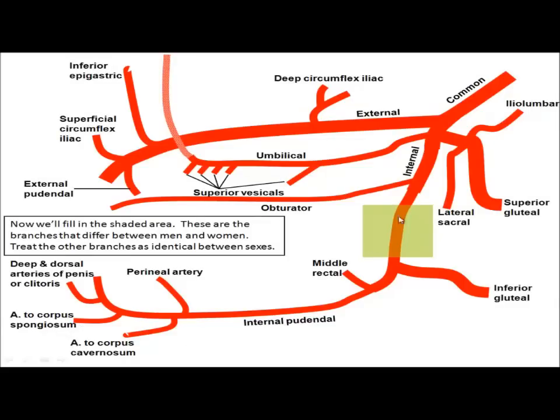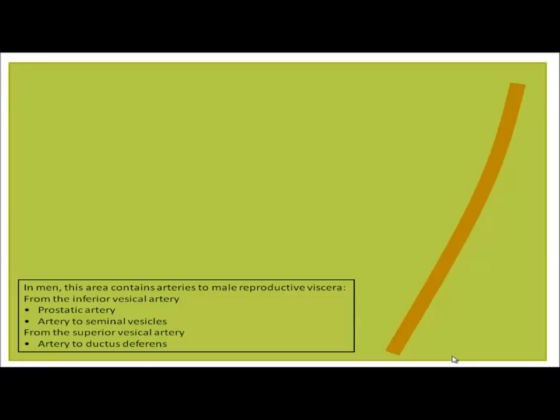Now, we're going to jump back and look at this area and the branches that come off in between the obturator and the terminus of the internal iliac. And the reason we're going to separate those is because they are different between men and women. If you know what's on the screen right now, you've got the unisex pelvic blood supply, and the male and female versions of it are just modifications of this existing scheme.